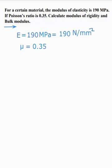Then we need to calculate modulus of rigidity. So modulus of rigidity is denoted by capital G. Capital G is equal to question mark. Then second, bulk modulus. Bulk modulus is denoted by capital K. Capital K is also question mark.